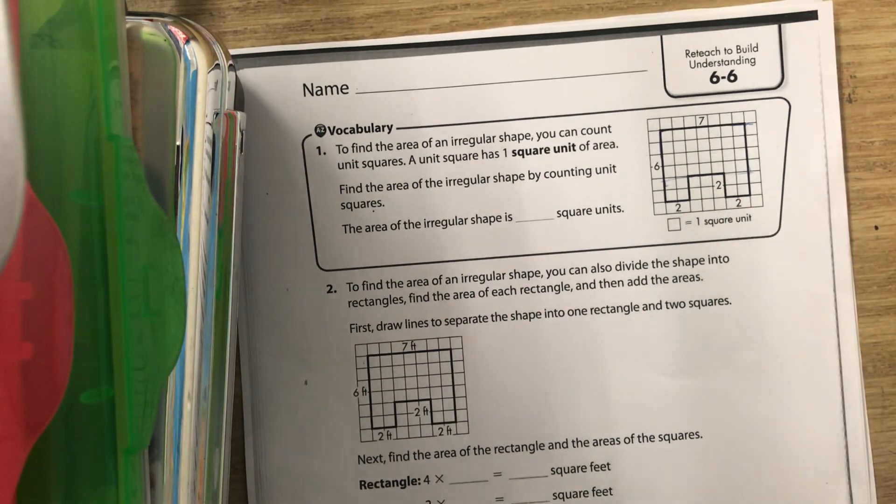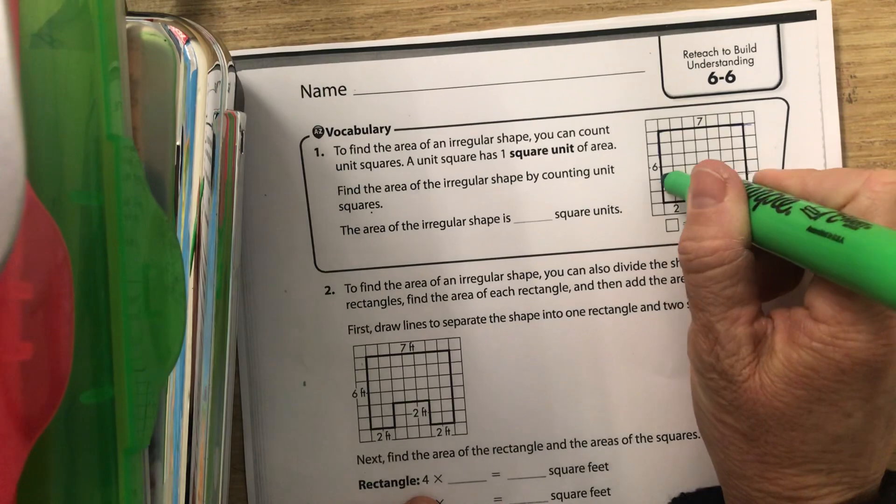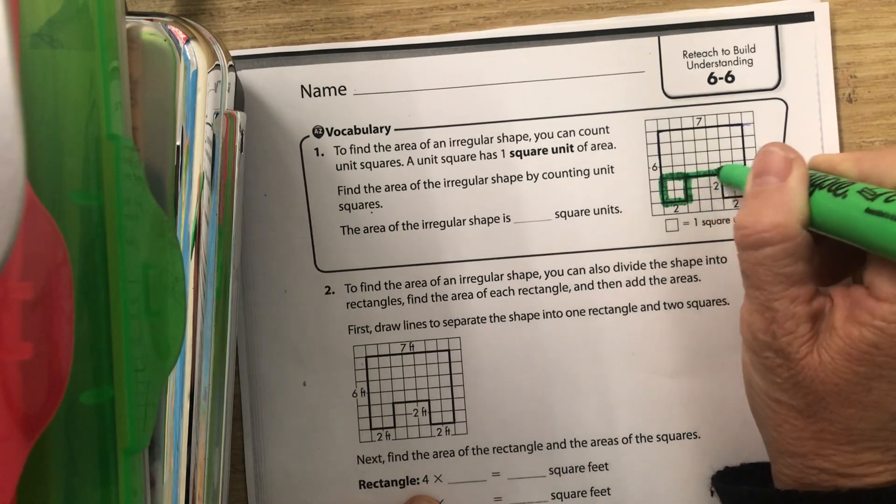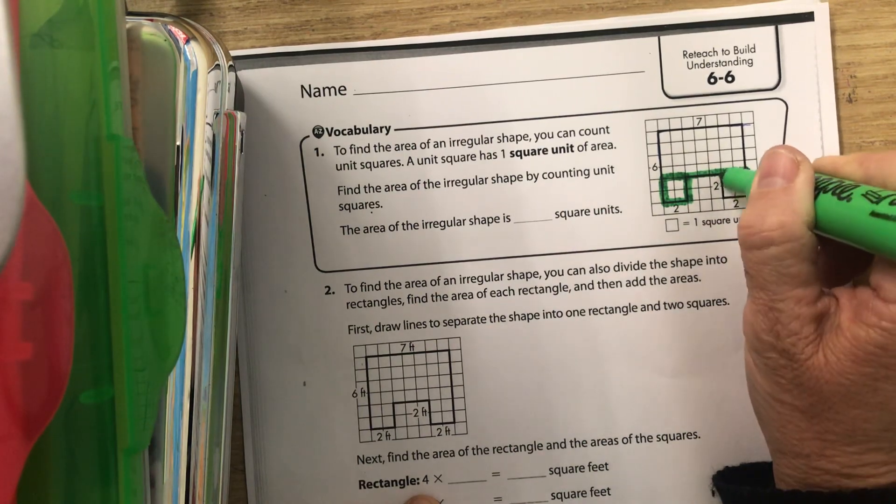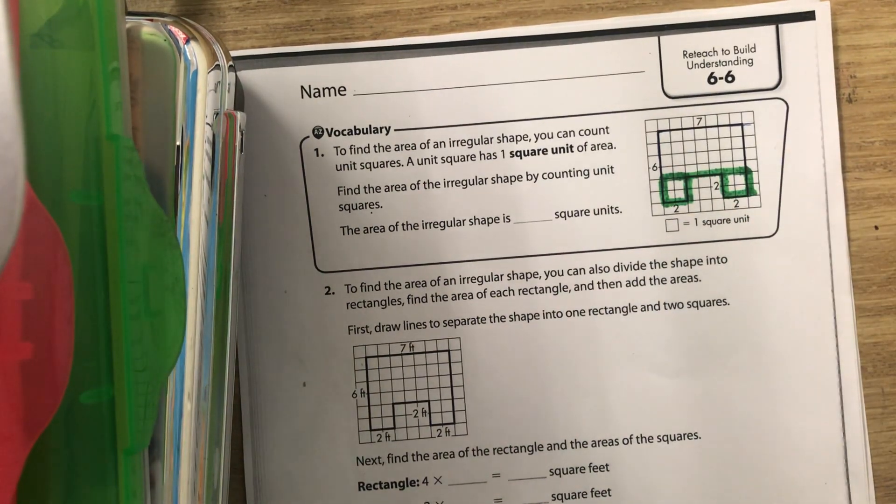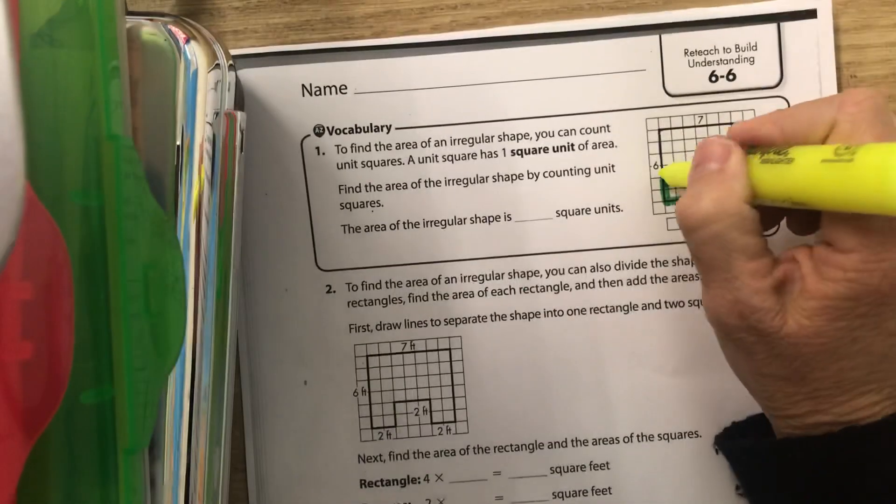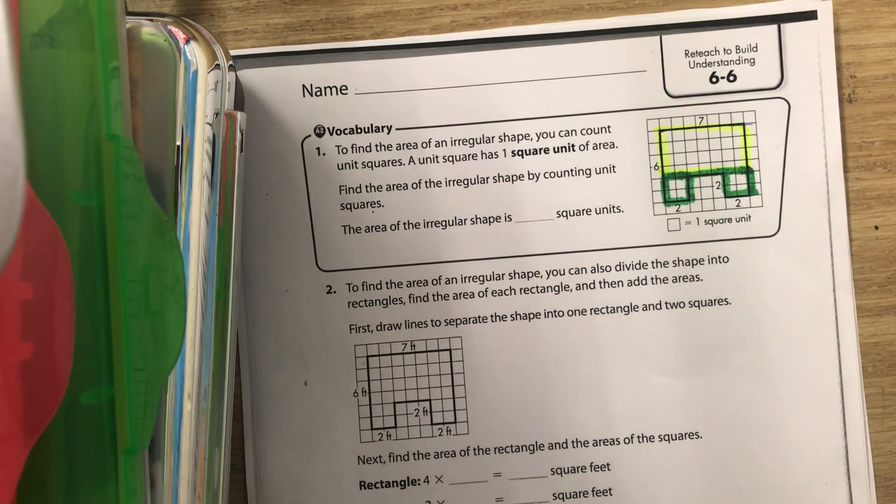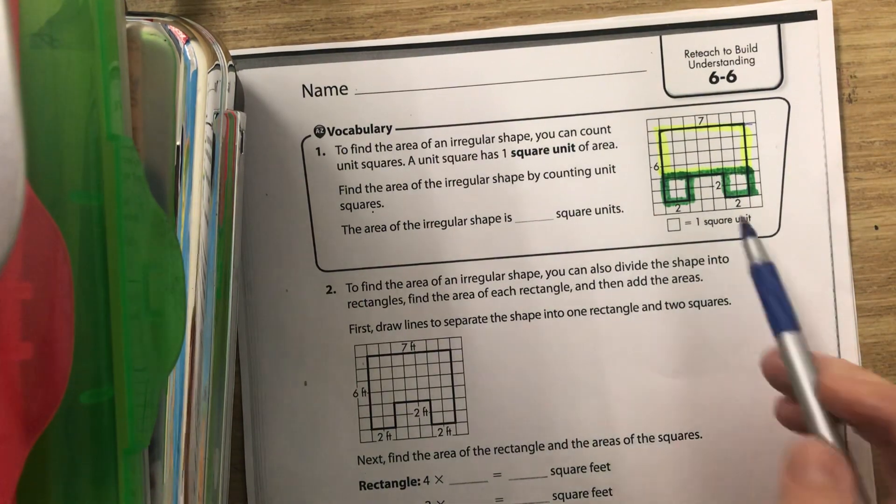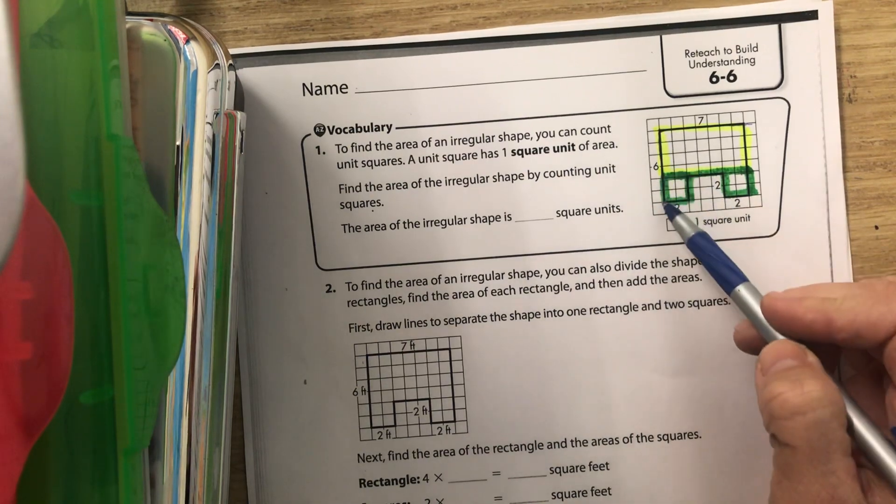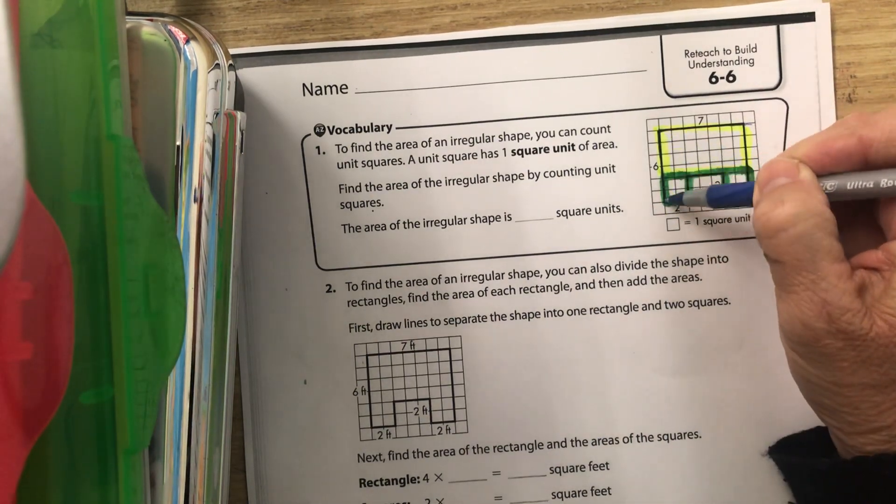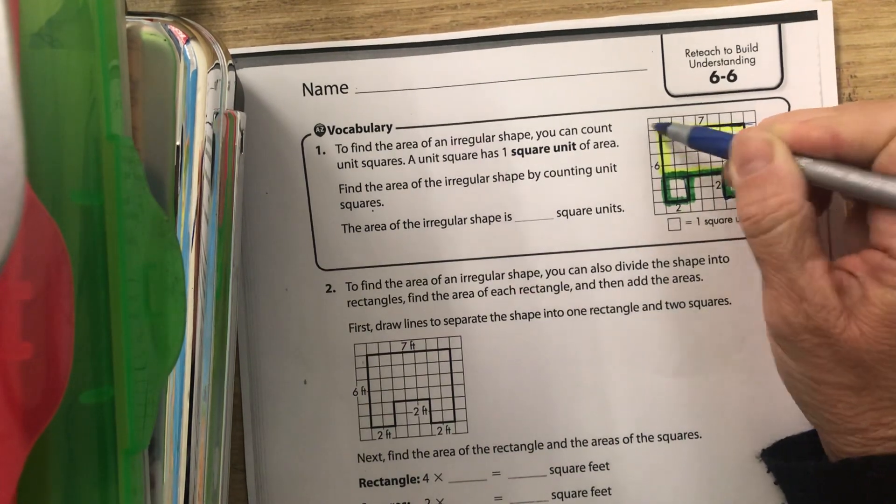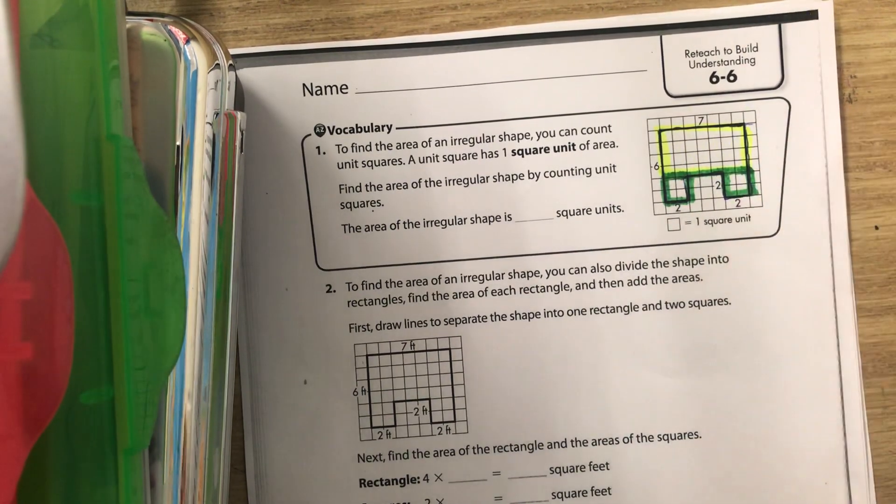For this one, we're just going to draw a line and make this into its own little box here, and this one, which will leave us with a third box up there. We're not going to worry about this—it's not part of the box. Remember, our shape was originally shaped like this. All of this over here doesn't count at all.